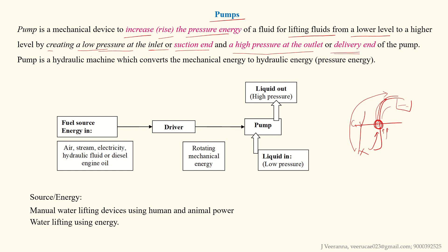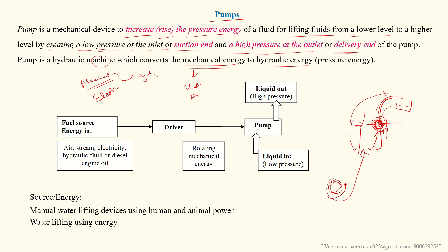Simply put, a pump is a machine which converts mechanical energy to hydraulic energy. The mechanical energy comes from electricity, diesel, petrol, or any energy source. Parts called impellers rotate, causing fluid to flow through them, and this motion is converted into head — that is, pressure energy or hydraulic energy.